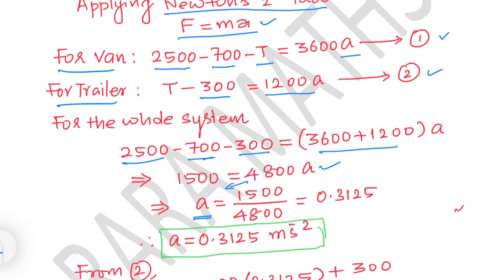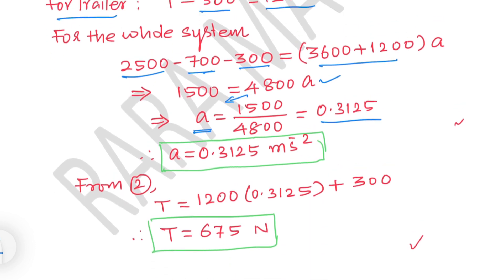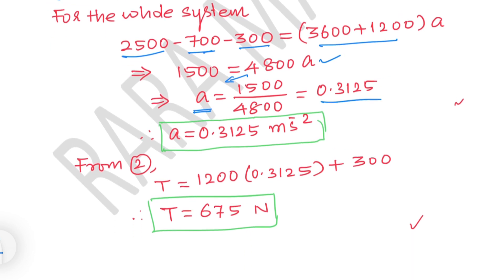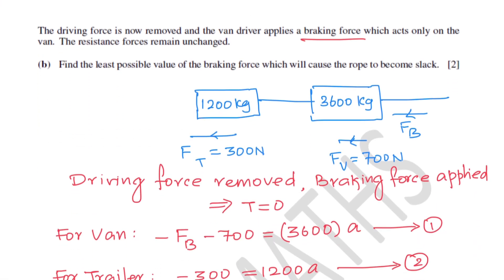Therefore acceleration equals 1500 over 4800, which gives 0.3125 meters per second squared. To find tension, substitute into the second equation: T equals 1200 times 0.3125 plus 300, which simplifies to give tension in the tow rope of 675 newtons.